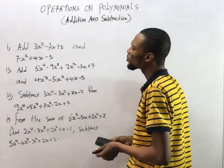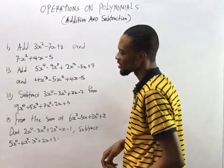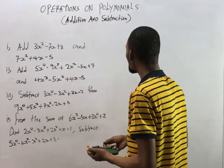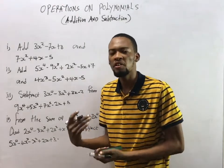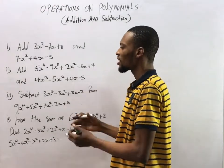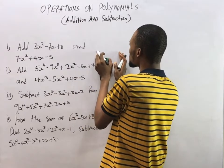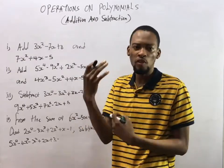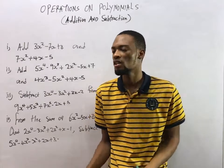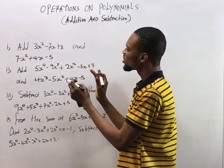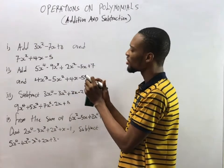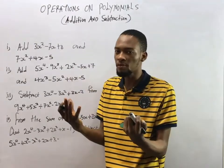Now, how do we add polynomials? Adding polynomials follows the same addition techniques you already know, and subtraction of polynomials follows the same subtraction techniques. The key rule is: in polynomials, you add or subtract only values with the same degree.